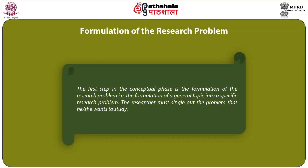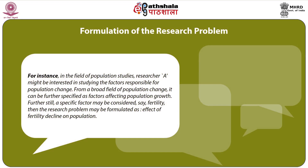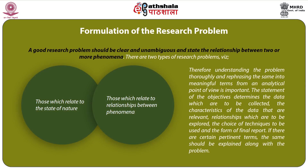The first step in the conceptual phase is formulation of the research problem, converting a general topic into a specific research problem. For instance, in population studies, a researcher interested in studying factors responsible for population change might further specify it as factors affecting population growth, and then focus on a specific factor like fertility, formulating the problem as 'effect of fertility decline on population.' A good research problem should be clear, unambiguous, and state the relationship between two or more phenomena. There are two types: those relating to the state of nature, and those relating to relationships between phenomena.